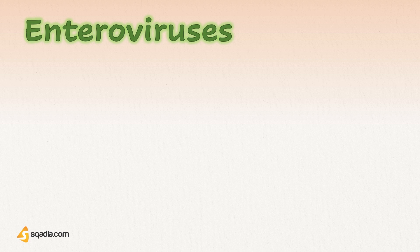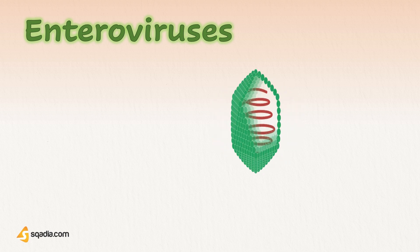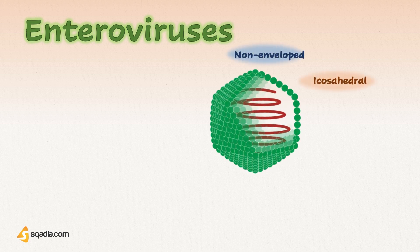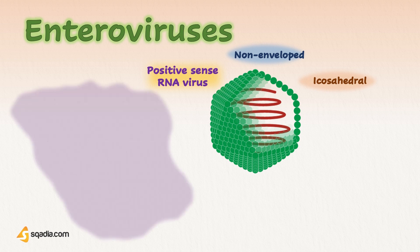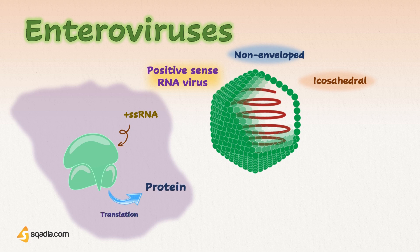Starting with Enterovirus. Enterovirus is a genus consisting of unenveloped icosahedral — that is, a polyhedron having 20 faces — positive-sense RNA viruses. Positive-sense RNA is the one that has just come out of the virus and is readable by the host ribosomes and is directly translated into proteins.